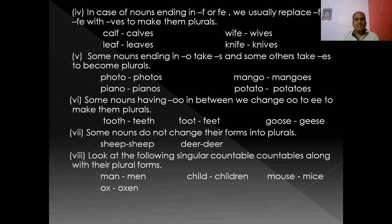Some nouns ending in O take S, while some others take ES to become plural. For example: photo → photos, piano → pianos — these are technical or musical instruments. But for fruits like mango and potato, we use ES: mango → mangoes, potato → potatoes. The difference is natural versus artificial.